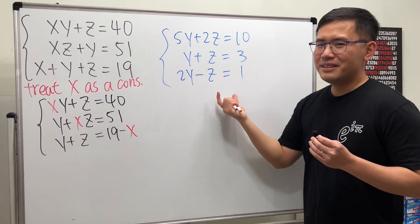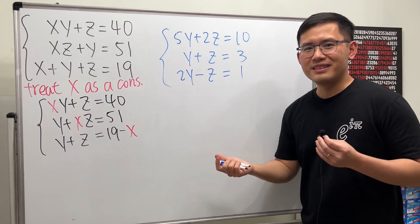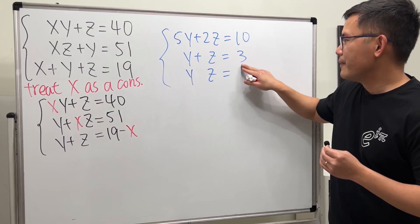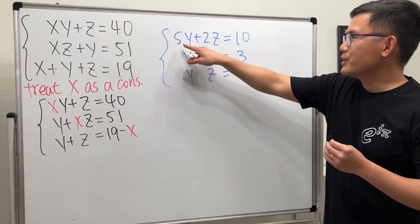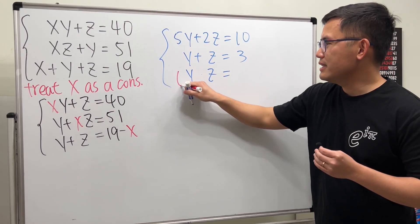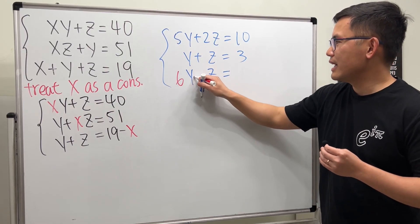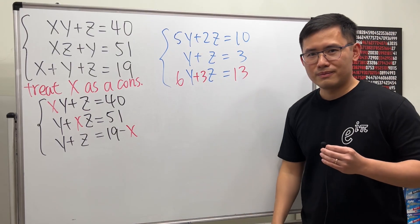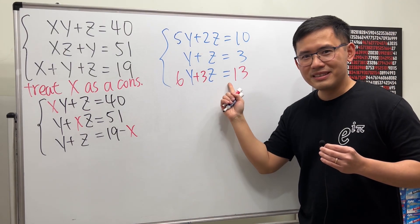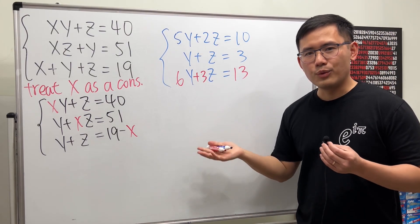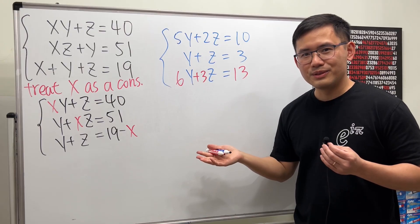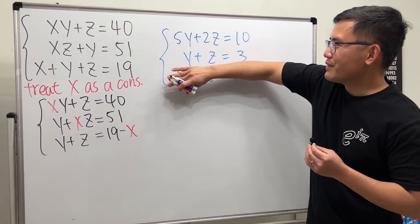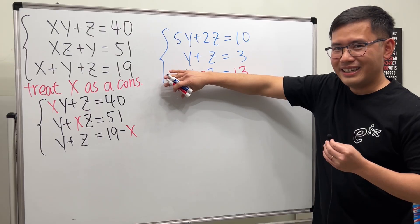There is one condition under which a solution can still exist: the third equation is redundant. What I mean is, imagine you add the first and second equations together to get a third — that third equation is just a combination of the originals, so the system will of course still have solutions.